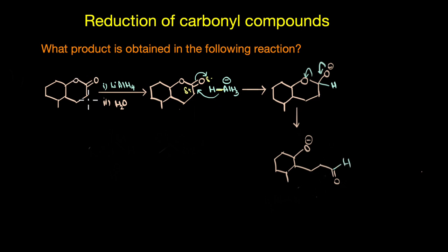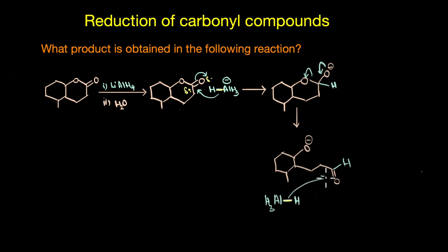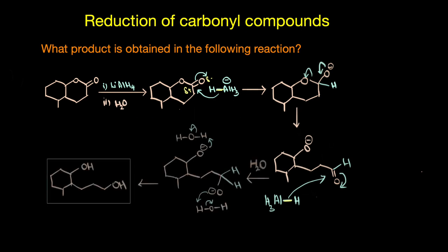Since lithium aluminium hydride can reduce an ester, it can easily reduce the aldehyde intermediate as well. A second hydride attack takes place where the electron pair in the Al–H bond attacks the C=O group of the aldehyde and delocalizes the π electrons. Once the reduction is complete, water or mild acid is added; the O⁻ ion abstracts a proton from water to give the final primary alcohol.